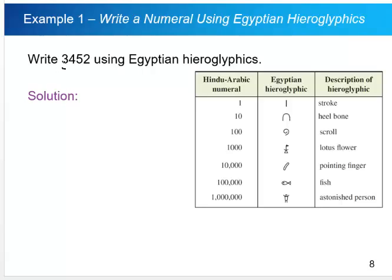So there's three thousands, so we want to write three lotus flowers. There's four hundreds, so I want to draw four scrolls.